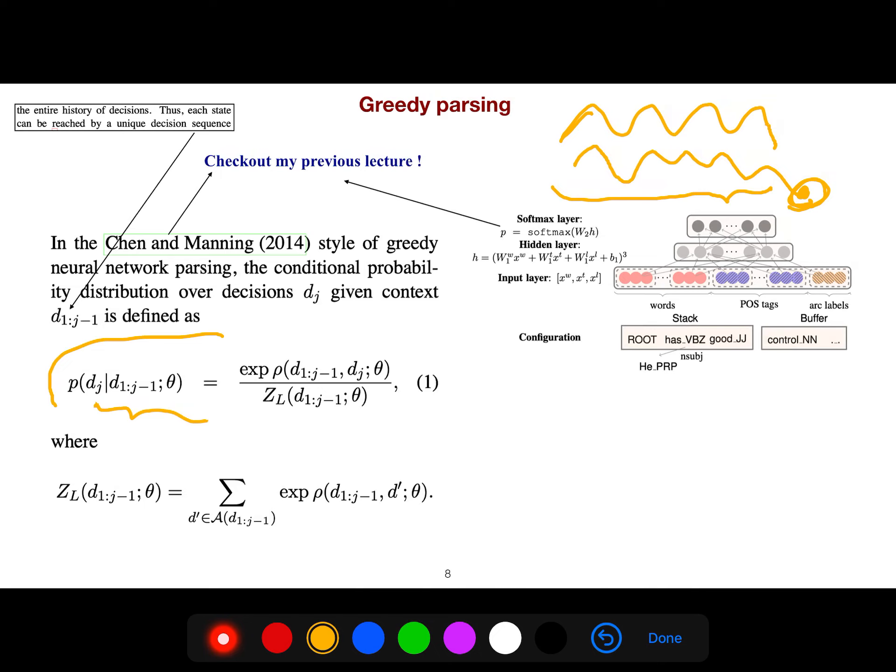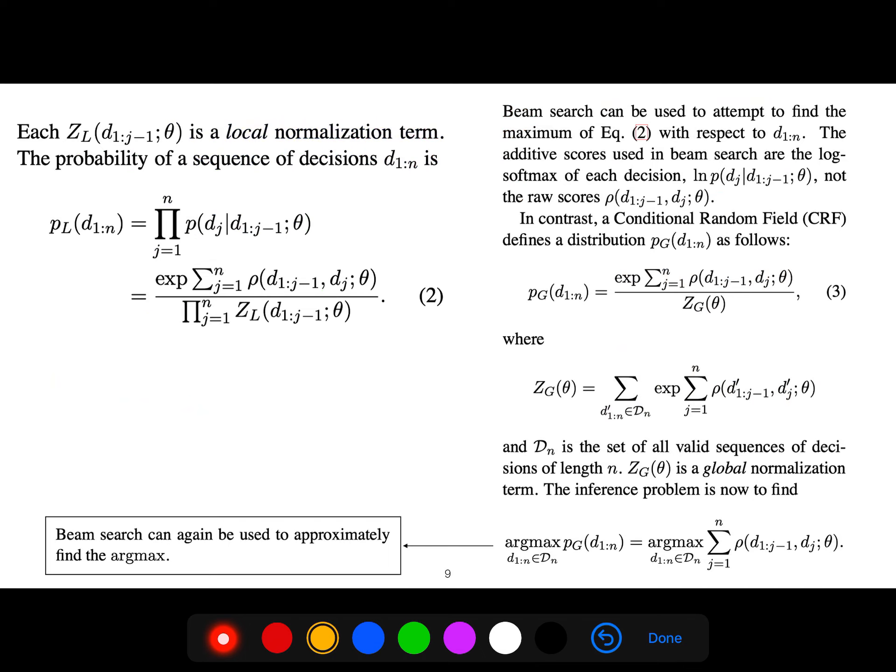In this paper we are not using local normalization, we are using global normalization. Conditional random fields define a distribution where the normalization constant is ZG. DN is the set of valid sequences of decisions, and we call this ZG the global normalization term.